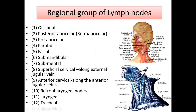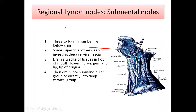The regional lymph nodes we need to know include: the occipital lymph nodes, the posterior auricular lymph nodes, the pre-auricular lymph nodes, the parotid lymph nodes, the facial lymph nodes, the submandibular and submental lymph nodes, the superficial cervical along the external jugular vein, the anterior cervical along the anterior jugular vein, and the retropharyngeal, laryngeal, and tracheal nodes.